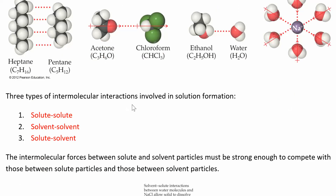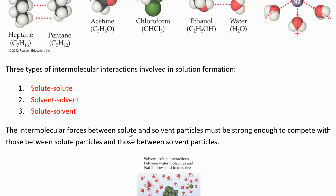There are three types of intermolecular interactions involved in solution formation. In a solution, you have a solute and a solvent, so you have solute-solute interactions, solvent-solvent interactions, and solute-solvent interactions. When you're making a solution, you have to break apart the solute particles, break apart the solvent particles, and then form new solute-solvent interactions. For salt water, the solute-solute interactions are between sodium and chloride ions, solvent-solvent are between water molecules, and the solute-solvent interactions are the sodium or chloride ions interacting with water molecules.